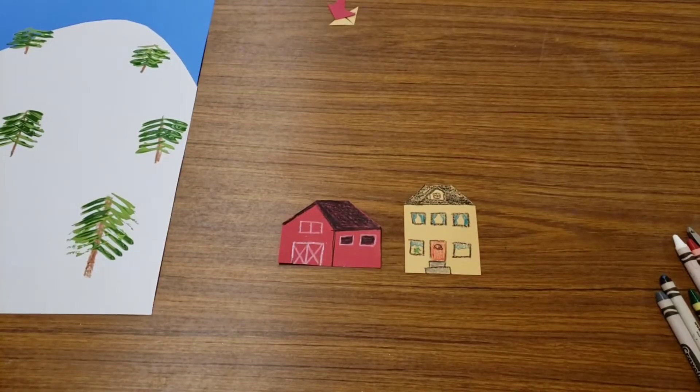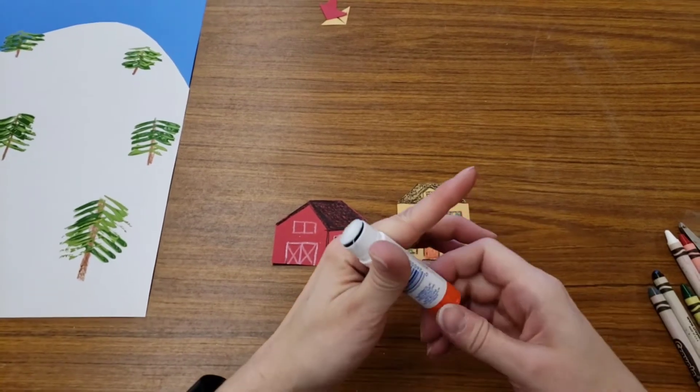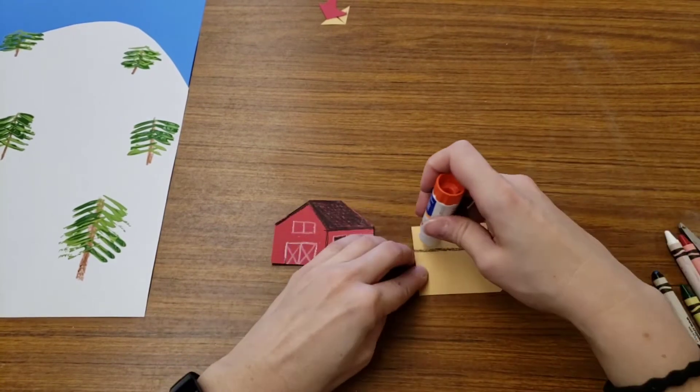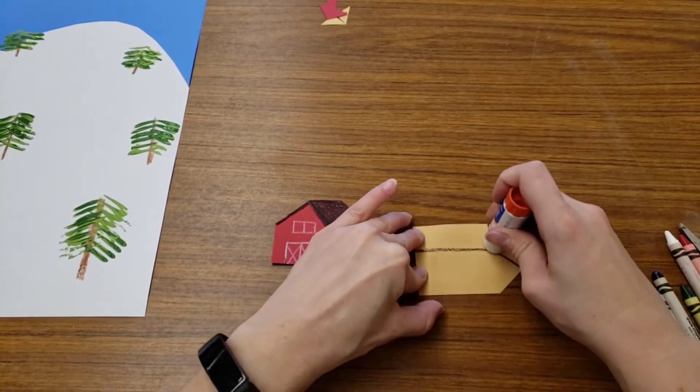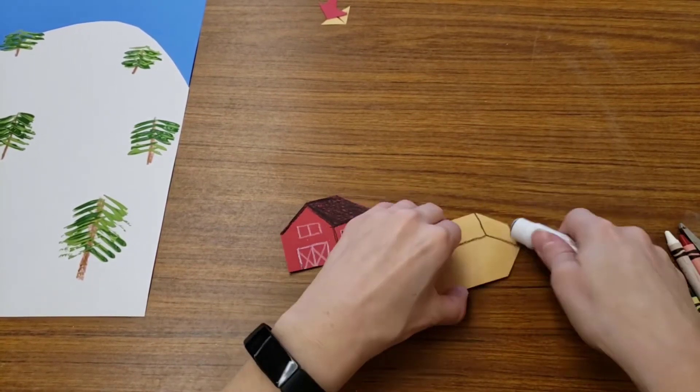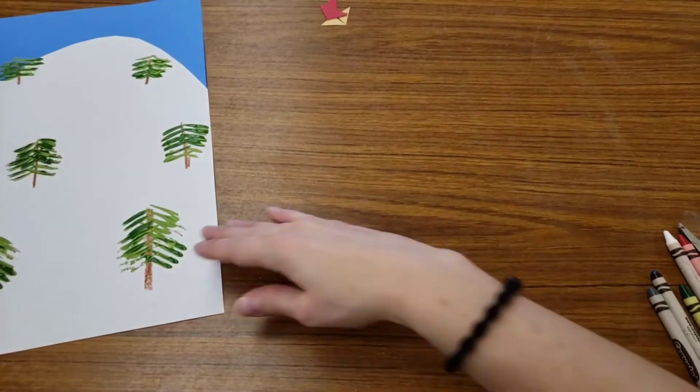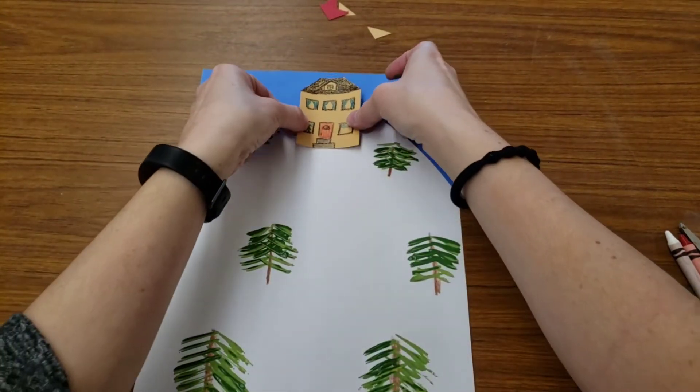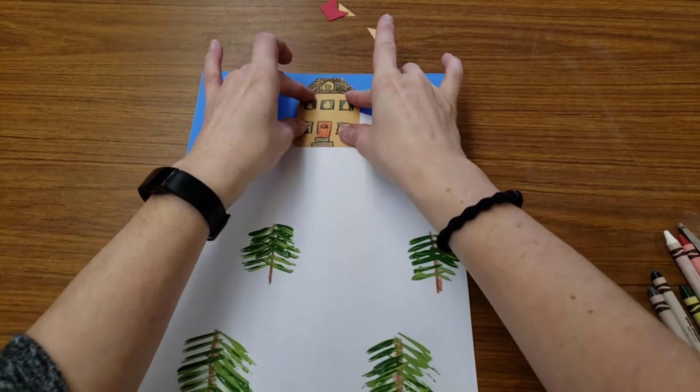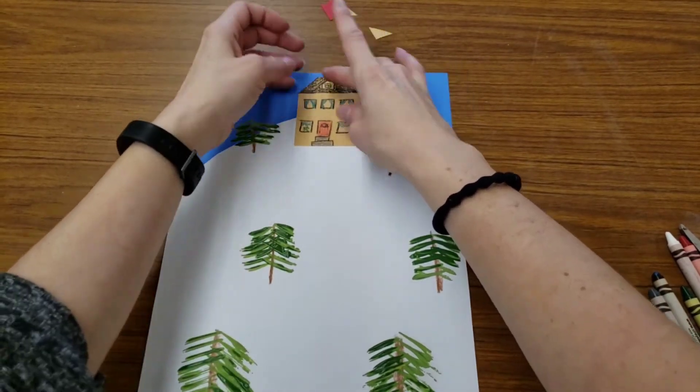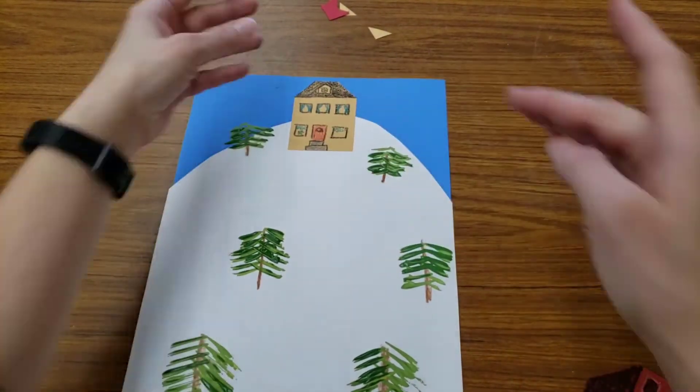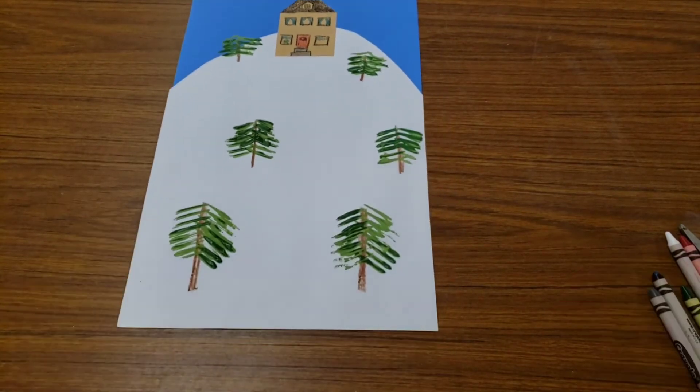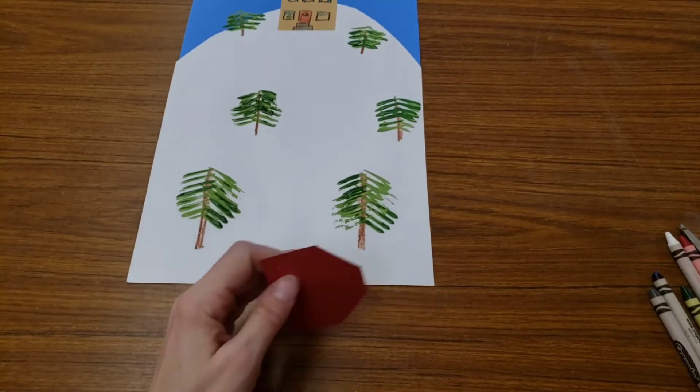Once your buildings are all decorated, you're going to pick one and put it on top of the hill. Make sure it's on your page and not hanging off the edge, so glue it down. Take the other one and decide where you want it to go.